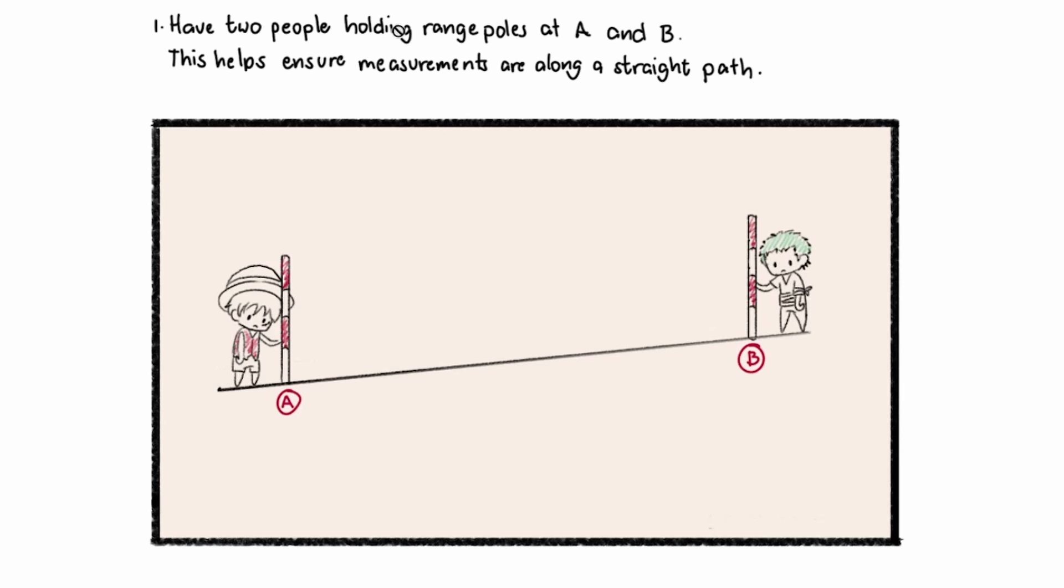The first step here is to identify points A and B, and then have two people holding range poles at those points. So we have A and B. This helps ensure that the measurements are along a straight path.